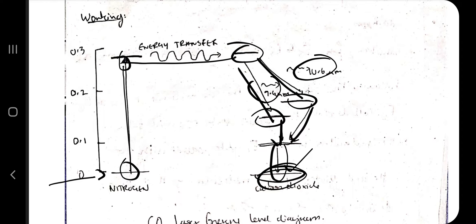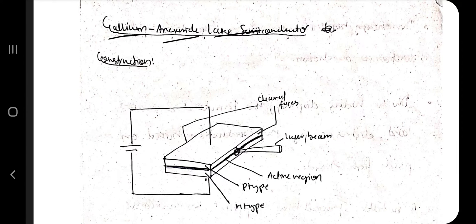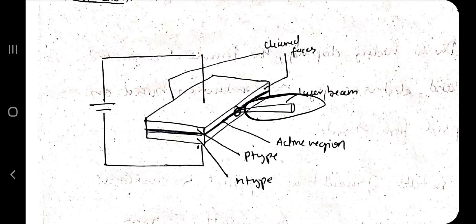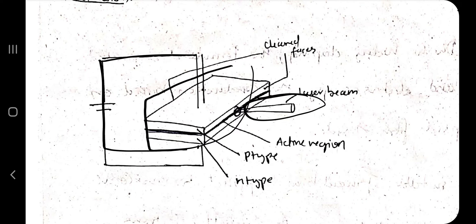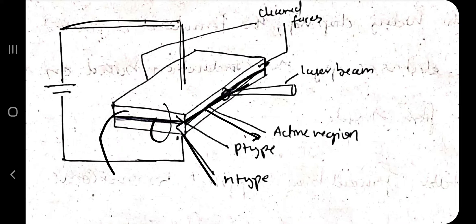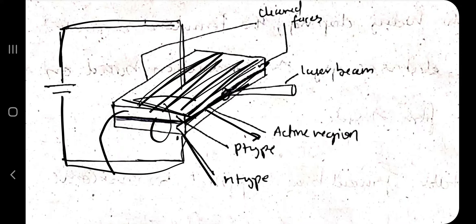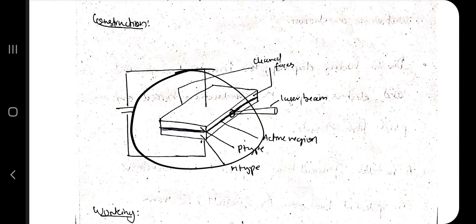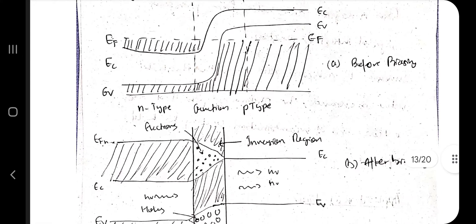Moving on to the gallium arsenide semiconductor laser. The construction shows a laser beam released from the main component connected to power supplies. The top layer is p-type, the bottom is n-type, and the active region is in between. It is forward-biased, and the junction is made of thin sheets. The surfaces are made of material that allows reflection and traveling of waves.